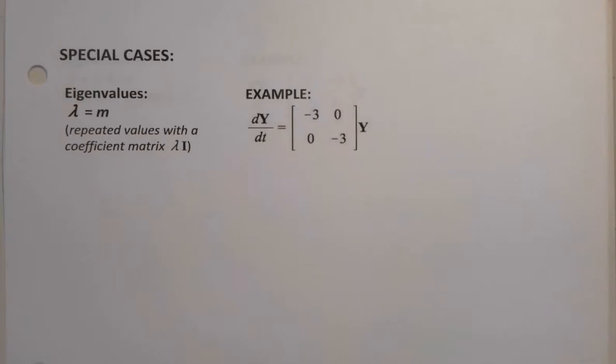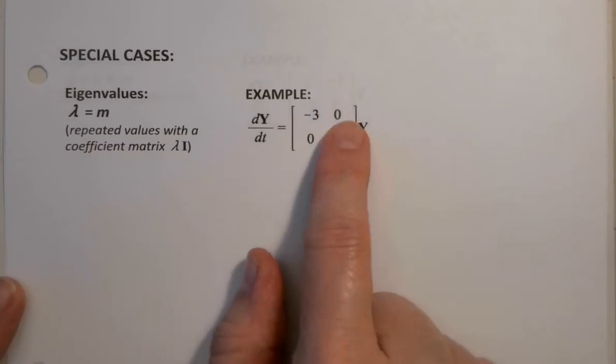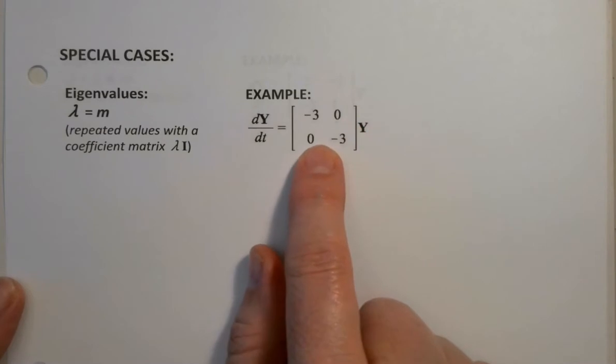So we have, at this point, seen what happens when you have a repeated eigenvalue. But what happens when you have a very special case repeated eigenvalue? In this case, the repeated eigenvalue comes from the fact that the diagonal is zeros, all zeros, nothing there.